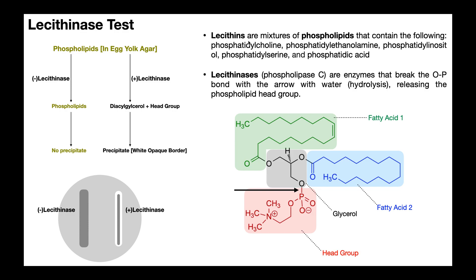First of all, lecithins are mixtures of phospholipids. Phospholipids are compounds that make up the plasma membrane, and lecithins are mixtures of these phospholipids. For example, they can contain any of these subtypes of phospholipids, like phosphatidylcholines, phosphatidylethanolamines, phosphatidylinositols, phosphatidylserines, even phosphatidylacids. And if you have a mixture of any of these compounds, that would be lecithins.